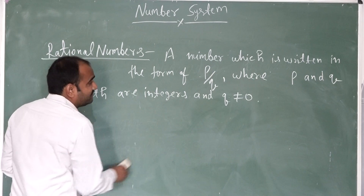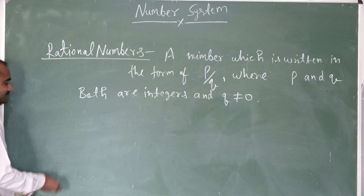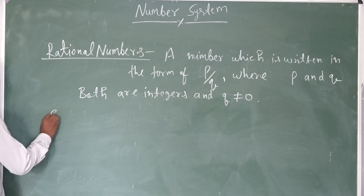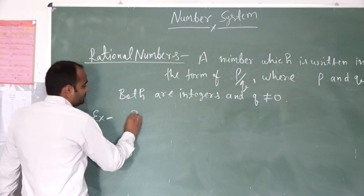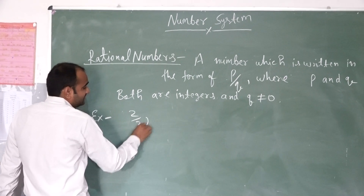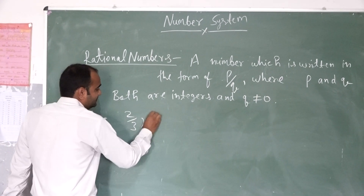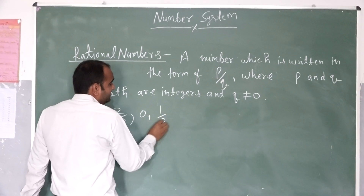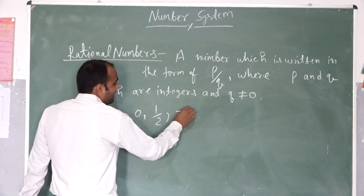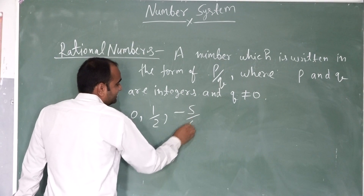For example, like 2 by 3, 1 by 2, minus 5 by 6. These are examples of rational numbers.